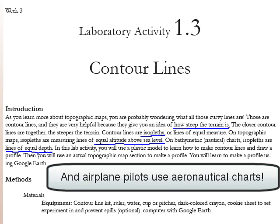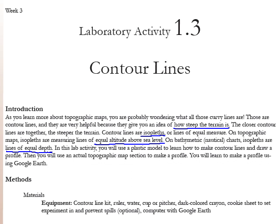In this lab activity you have a contour model kit. If you're doing this lab with your own equipment, go ahead and get that contour model kit and the other equipment you need. You're going to draw contour lines on it and learn how to make a profile. Topographic maps give you a top view — a view looking down — and a profile is like a side view. We'll use data from an actual topographic map to make a profile, and then you'll learn to make one using Google Earth.